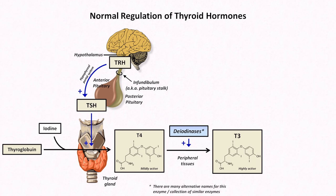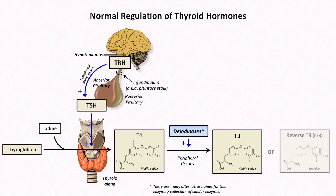There are actually a number of different names for these enzymes in medical textbooks and in the literature. One of the more common alternate names is 5'-iodinase. Not all of the T4 gets converted to T3, as some also gets converted into the molecule reverse T3, which, as I said before, is inactive.